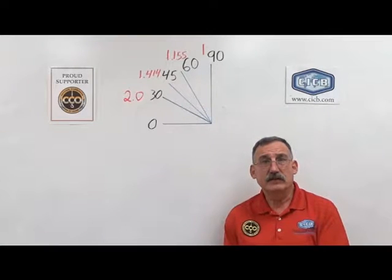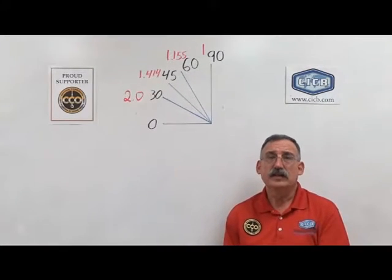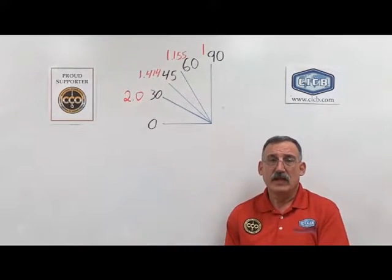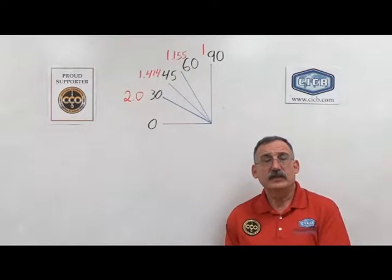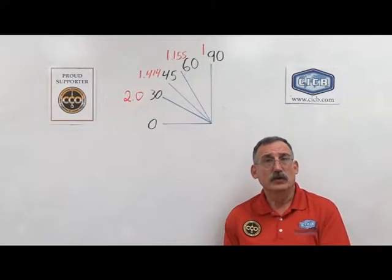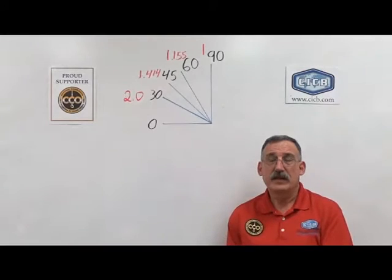At a 45 degree angle, our sling angle factor is 1.414. And at 30 degrees, our sling angle factor is 2, or twice our angle of loading.